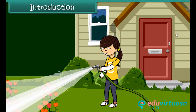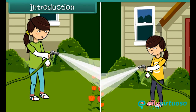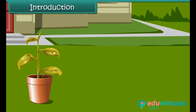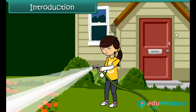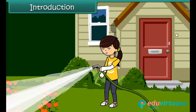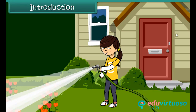Tanu waters the plants in her garden every day. She knows that if she does not do so, they will wilt and ultimately die. But she is curious to know how the water that she supplies to the roots reaches the leaves of the plants. In this lesson, we will discuss the process of transportation of water, nutrients and food in the plants.